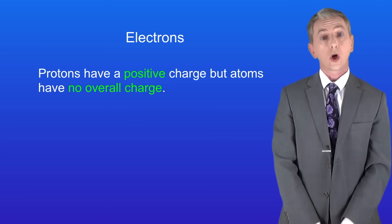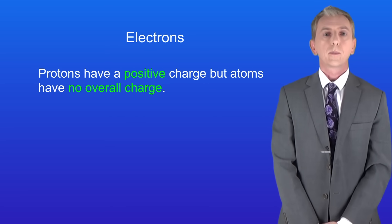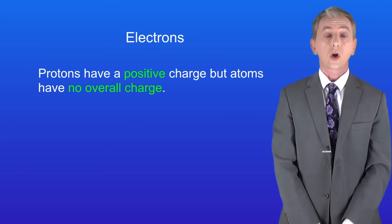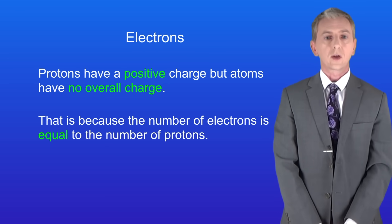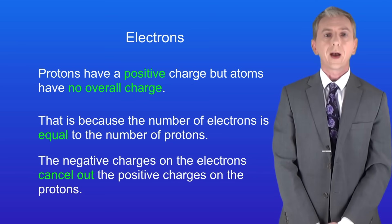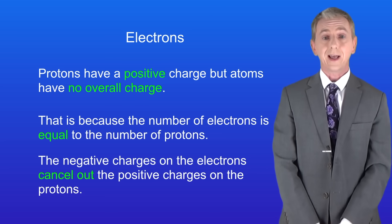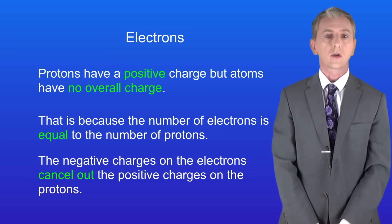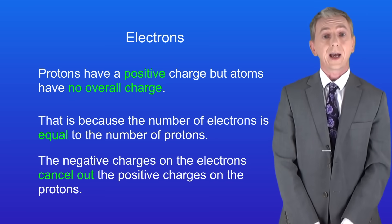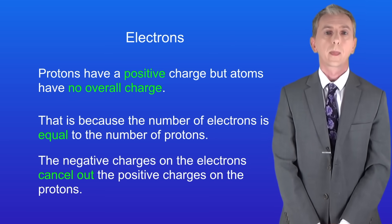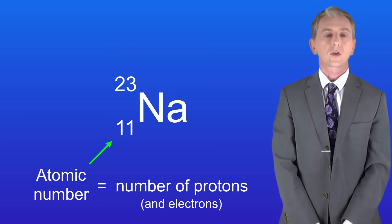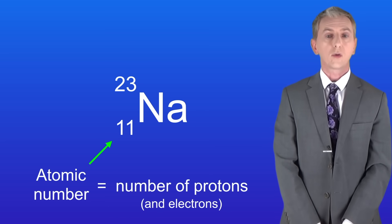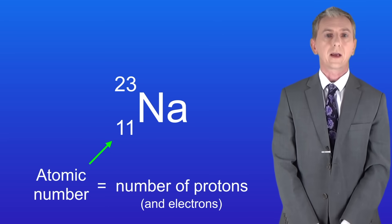Protons have a positive charge, but atoms have got no overall charge, and that's because the number of electrons is equal to the number of protons. That means that the negative charges on the electrons cancel out the positive charges on the protons, so the atom is neutral overall. Going back to the symbol for sodium, because sodium atoms contain 11 protons they also contain 11 electrons.